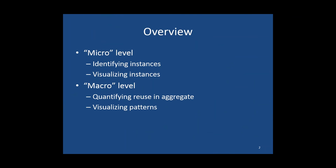Here's a quick overview of what I'm going to talk about. First, I'll talk about text reuse on the micro level — individual instances of text reuse or parallel passages. I'll use those terms interchangeably. I'll cover how we identify and visualize these, and then take a step back to look at the overall picture of text reuse on a corpus level across the set of Pre-Qin and Han texts — how we quantify and visualize it.